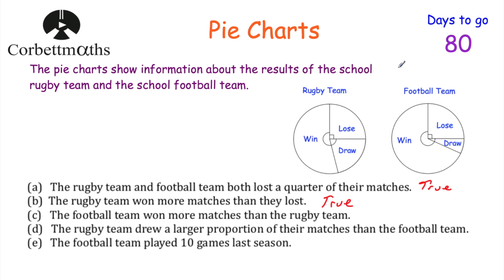Next statement: the football team won more matches than the rugby team. You might look at the pie charts and think the football team has a bigger sector for win, so they obviously won more matches. But we don't know how many matches they played. For instance, the football team could have played 40 matches whereas the rugby team may have played 400. If the rugby team won over half of 400 matches, that's going to be bigger than whatever proportion off 40. Because we don't know how many matches they played, we cannot tell who won more.